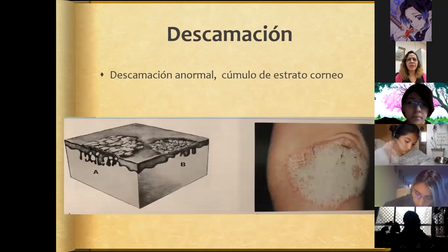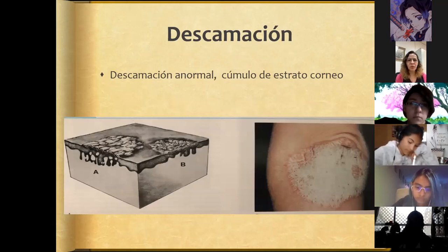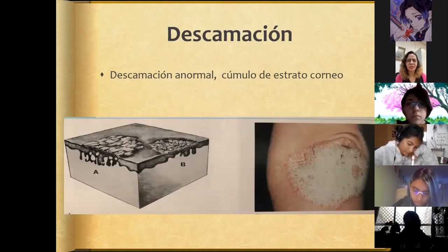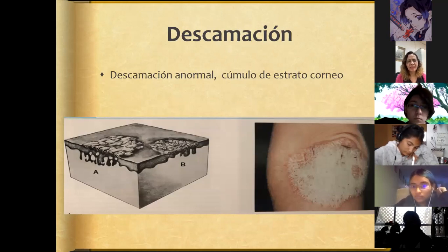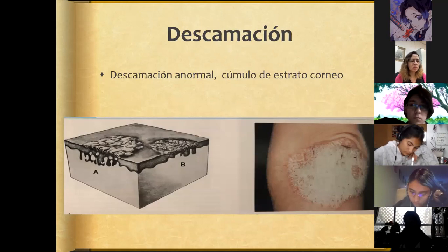Desquamation is an accumulation of stratum corneum, meaning there is a pathological process — the skin is not keratinizing normally and therefore produces thickening and scales. Fine scales are called furfuraceous, resembling bran cereal — very fine. Or it can be very thick, whitish, adherent scaling, as in the psoriasis photo we are viewing.